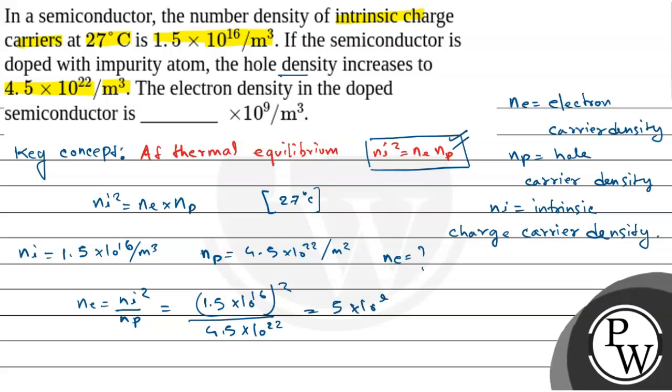Which equals 5 × 10^9 per meter cube. That means the electron density is 5 × 10^9 per meter cube.